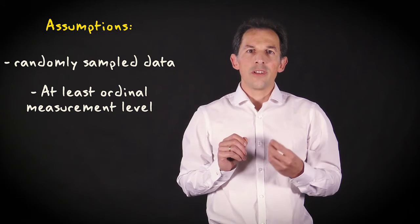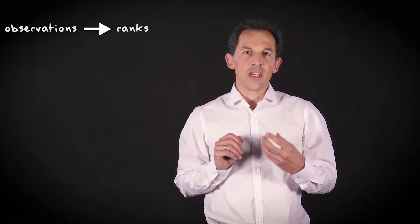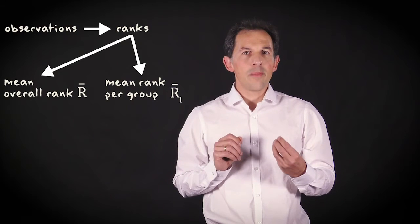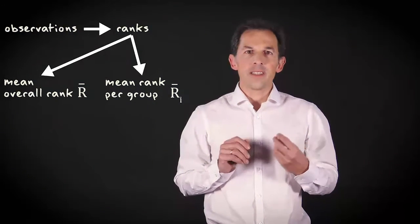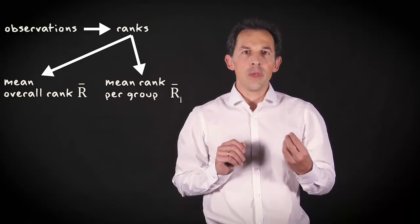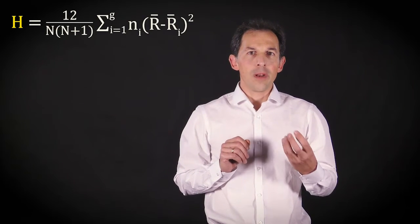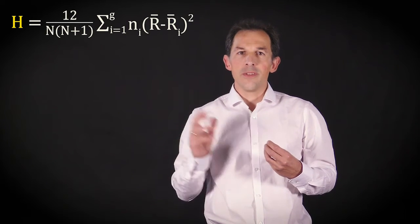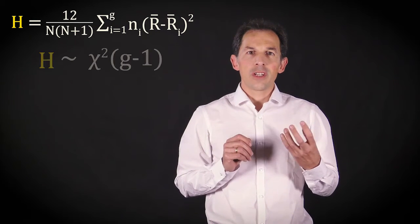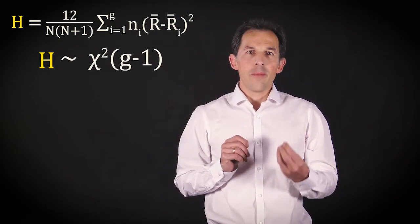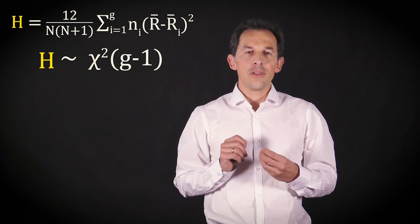It first determines the ranks for the combined samples and then finds the sample mean rank for each group. The test statistic is based on the variability between the mean group ranks and the formula to calculate the test statistic is given here. It follows a chi-square distribution with the number of groups minus one degrees of freedom.